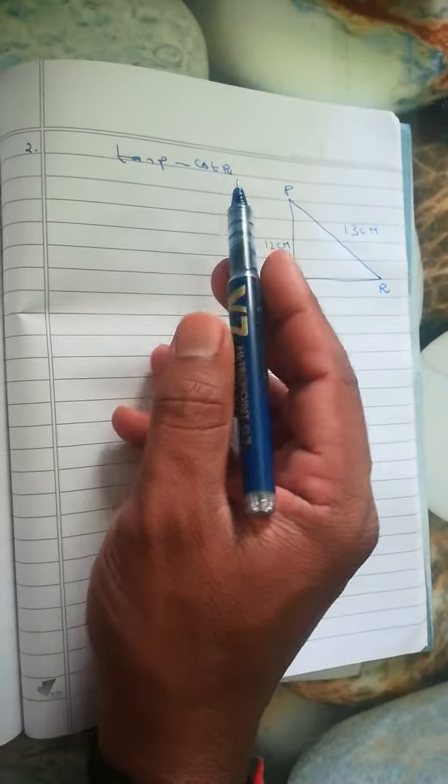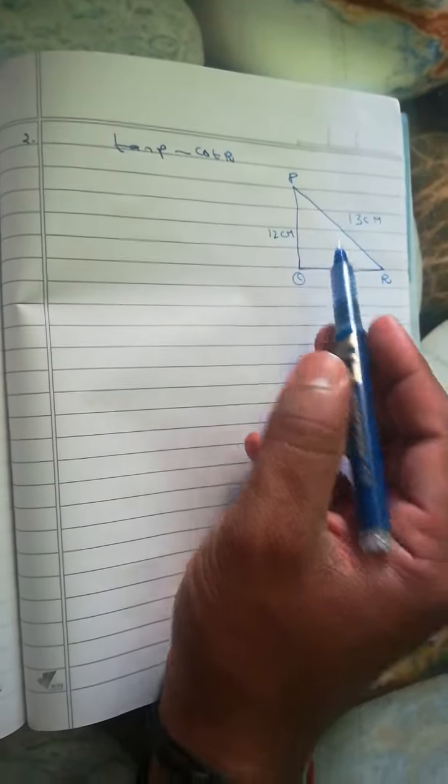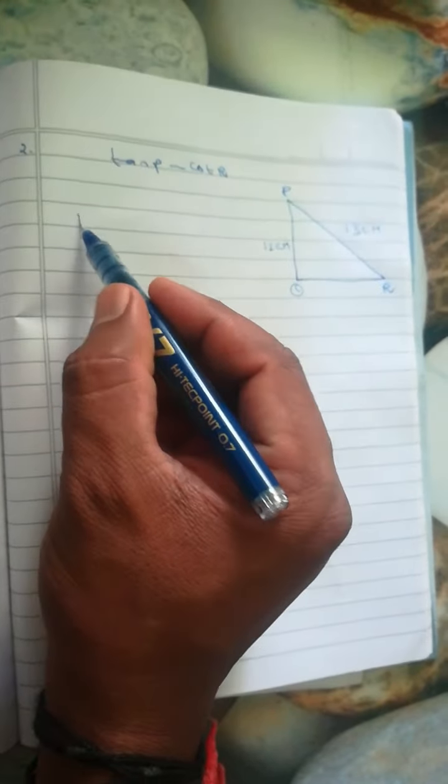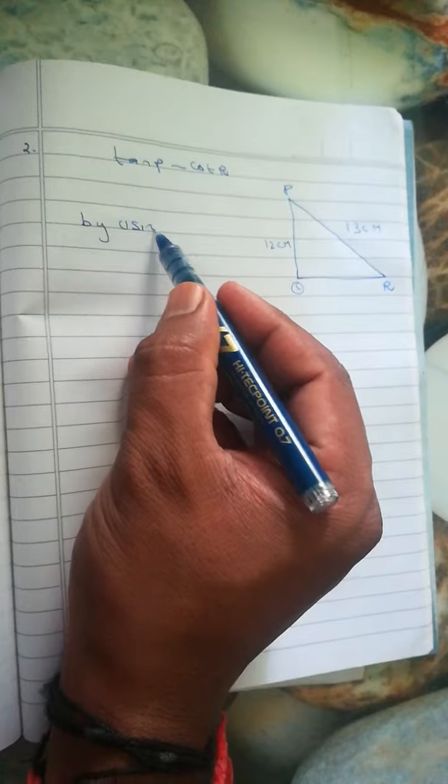Now the next question: tan P minus cot R. The figure is given in the diagram, so we're going to find the third portion by using the Pythagoras theorem.